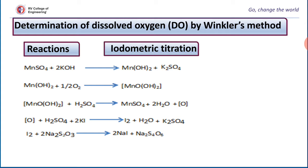To a known quantity of water sample, divalent manganese solution is added followed by alkali. Manganese sulfate reacts with KOH and forms manganese hydroxide. This manganese hydroxide gets oxidized to tetravalent manganese oxyhydroxide.